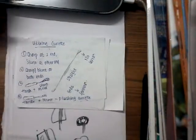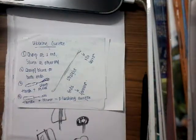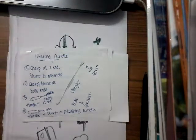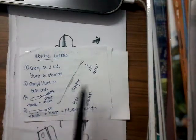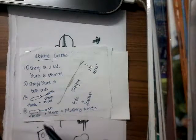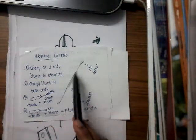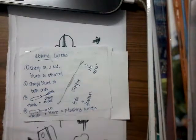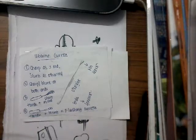The uterine curette can be of four different types. First, there can be a sharp end on one side and a blunt end on the other side. Sometimes you can see sharp or blunt ends on both sides. Sometimes there is a handle with a sharp end. If there is a handle and a blunt end, then it is called a flushing curette.